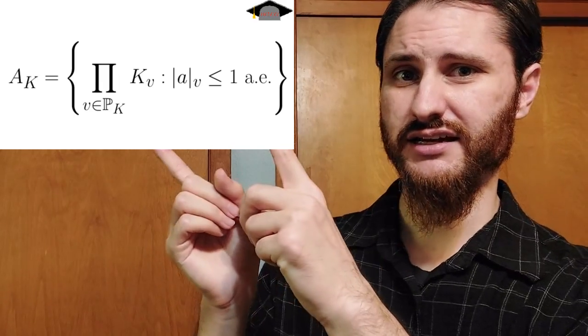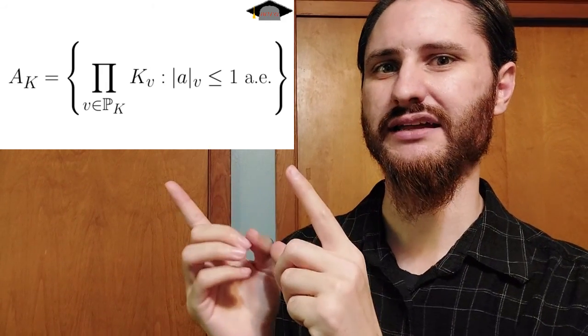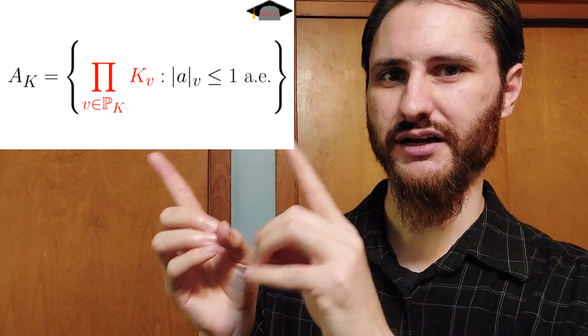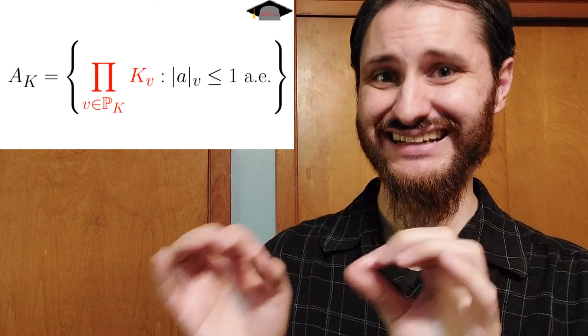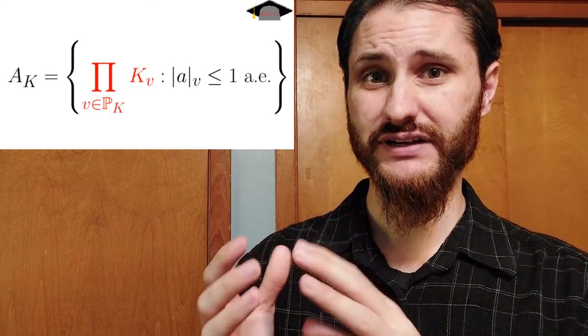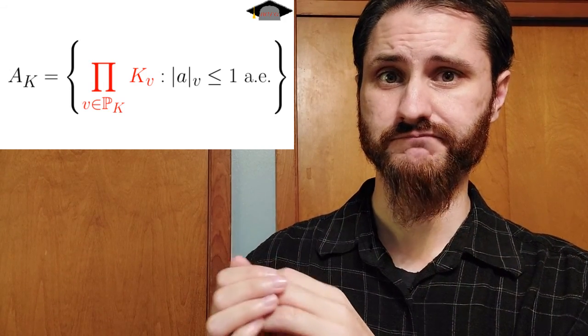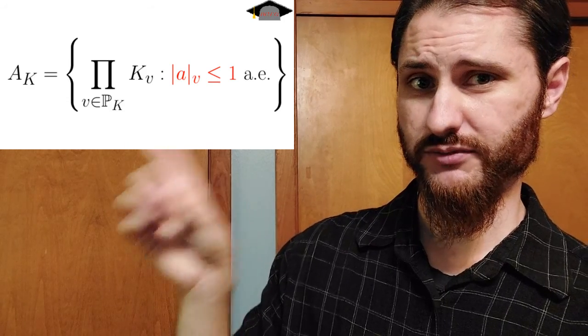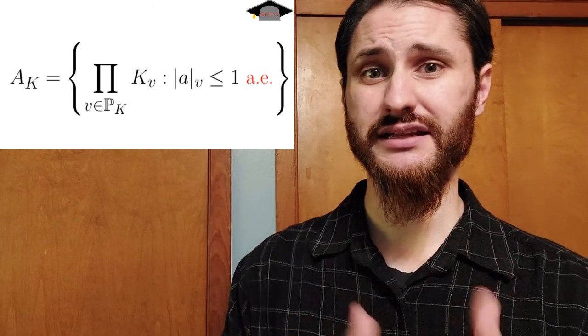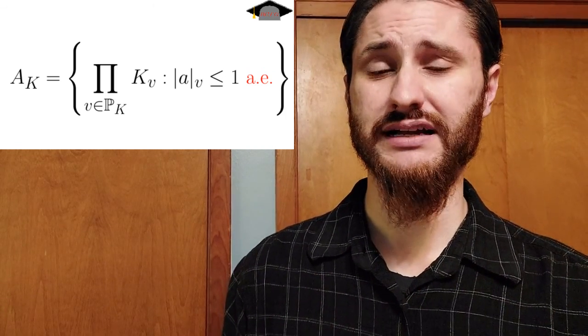Now that we've had this discussion about global fields, we can talk about the Adele ring, which was the original purpose for this video. We're going to start with function fields because the Adele ring there is actually a little bit nicer. For a function field, the Adele ring is defined as a subring of the full direct product of all the local fields K_v. Every Adele — every element of the Adele ring — will be an infinite tuple with one entry coming from each local field. However, there's a caveat: the entries in that tuple have to come from the unit ball almost everywhere, where 'almost everywhere' means for all but finitely many places.